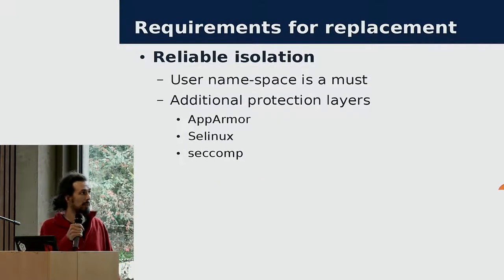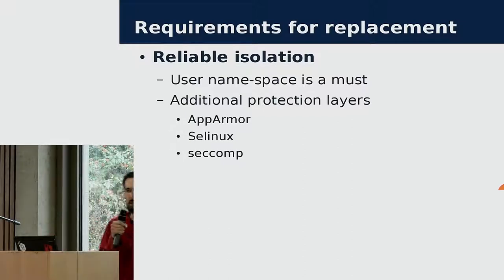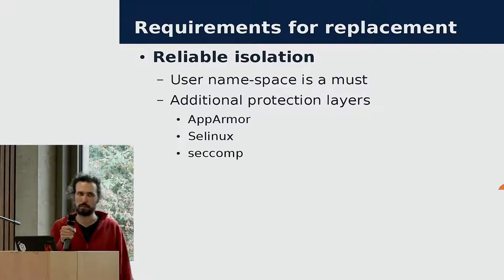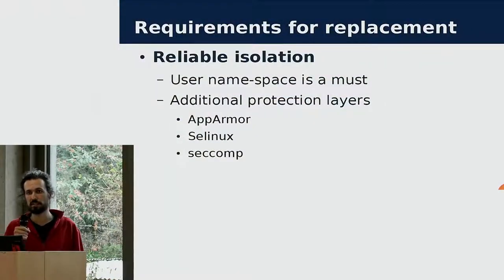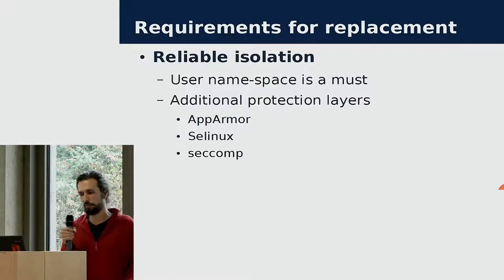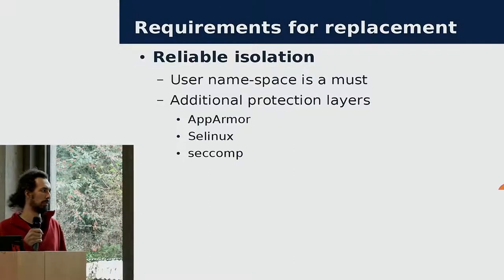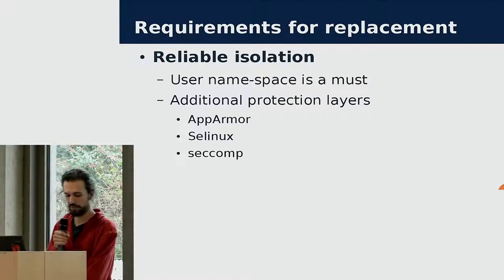For mainline Linux, user namespace is a must for us. It remaps PID 1 in a container to some other PID which is not PID 1 on the host system. We also apply additional protection layers. You can choose between AppArmor and SELinux. SELinux is quite problematic because we need policies for that, and there are only a few reference policies for RHEL and Fedora. With AppArmor that situation is easier, so we chose that. We also run seccomp with LXC to limit some syscalls.